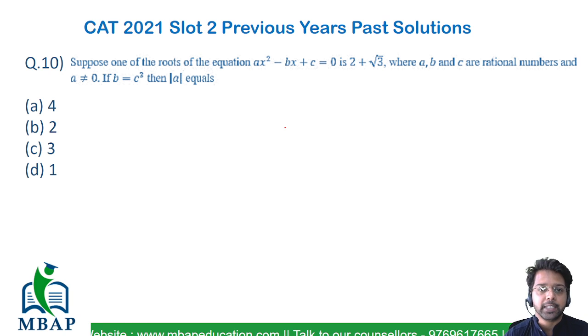The next question is a slightly easier one about a quadratic expression. The question asks: suppose one root of the equation ax² - bx + c = 0 is 2 + √3, where a,